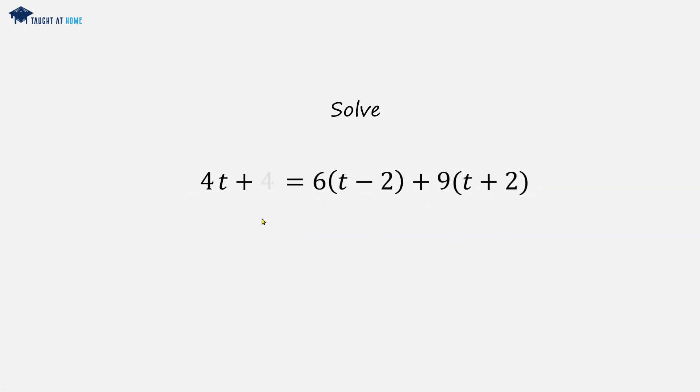4 times (t + 1) becomes 4t plus 4. 6 times (t - 2) is 6t minus 12. And 9 times (t + 2) is 9t plus 18.